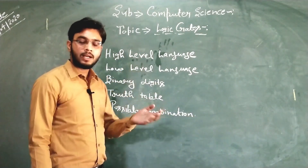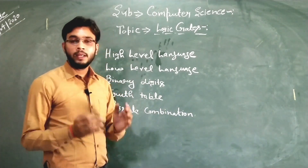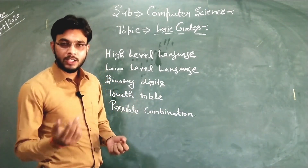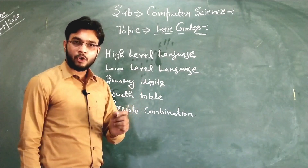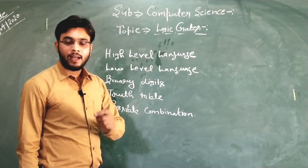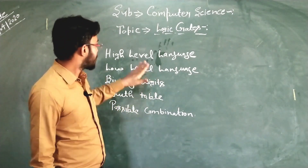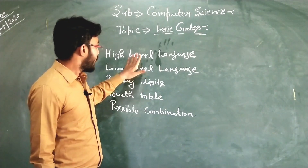High level language: the alphabets from A to Z, either capital or small, numbers from 0 to 9, and some special symbols come under the category of high level language.